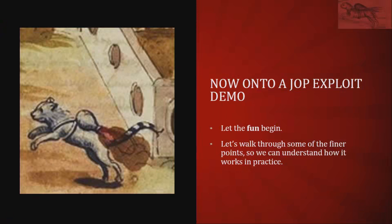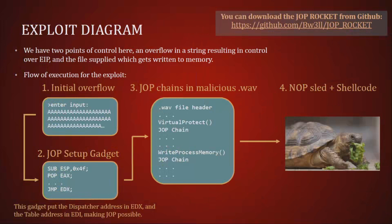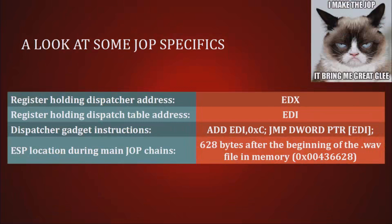Now we'll discuss a JOP exploit to demonstrate how everything comes together. This uses a wave reader that processes a wave file — we provide it with a malformed wave file. Initially we trigger an overflow to set things in motion, then set up our JOP gadgets: the dispatcher gadget, the dispatch table, and then the JOP chain. We bypass DEP (data execution prevention) by calling VirtualProtect and WriteProcessMemory, followed by a NOP sled and shellcode.